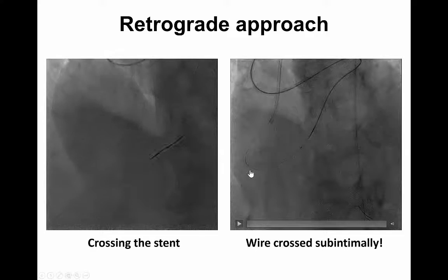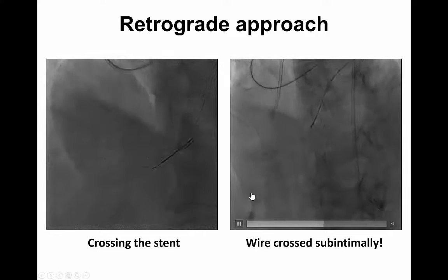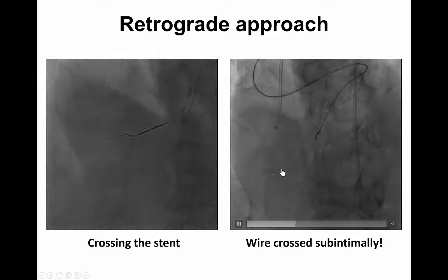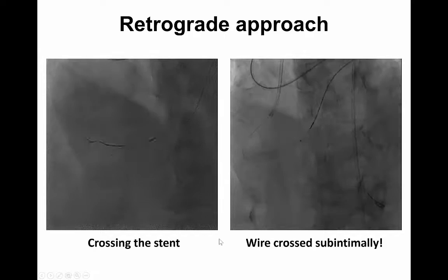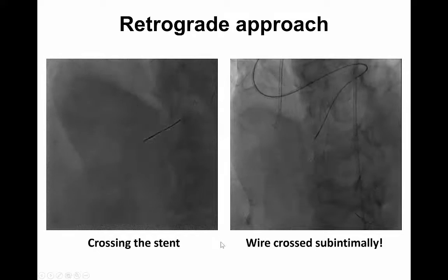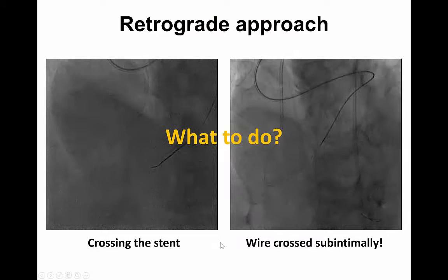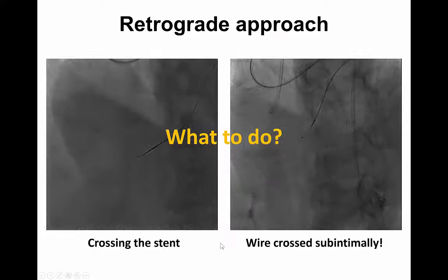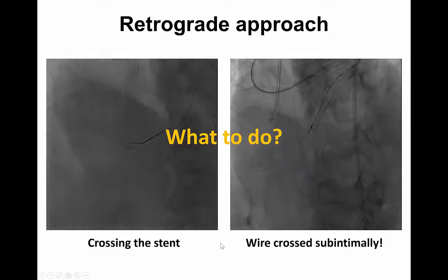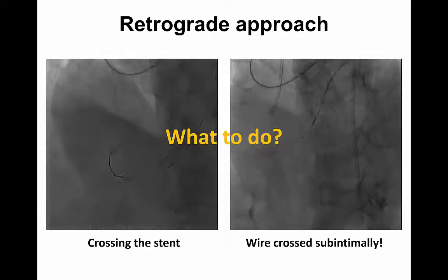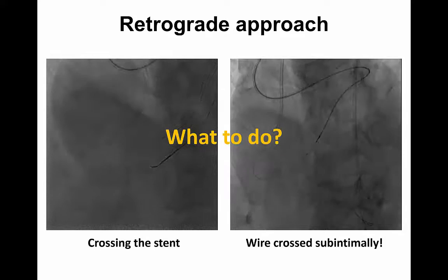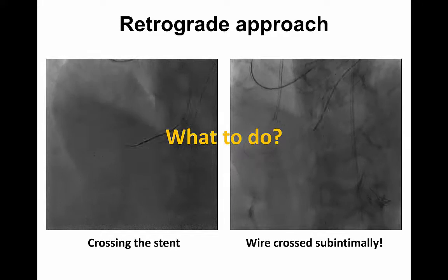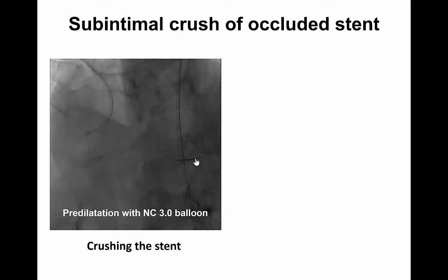But when we externalized the wire we found out in a different projection that the wire actually tracked completely outside the occluded stent. We evaluated that the probability of being able to cross the stent in a true-to-true lumen fashion, either retrogradely or antegradely, was extremely low, so we decided to carry on with a subintimal crash of the occluded stent.